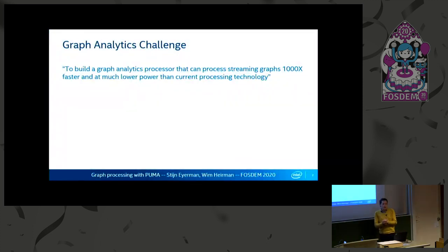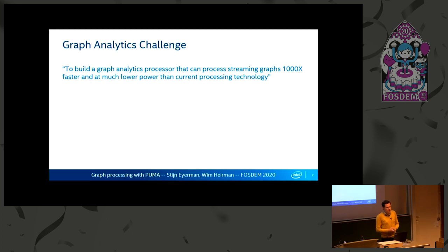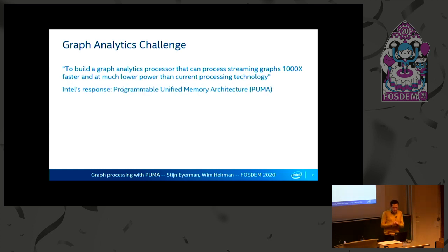Graph processing is getting bigger and bigger, and graphs are getting bigger and bigger, and we want to process more data. We found that we need to increase the efficiency of graph processing versus existing architectures such as CPUs and GPUs. So to that, we propose the programmable unified memory architecture, abbreviated as PUMA.